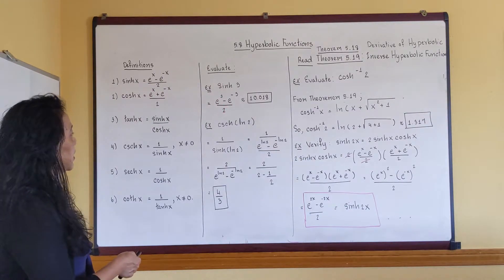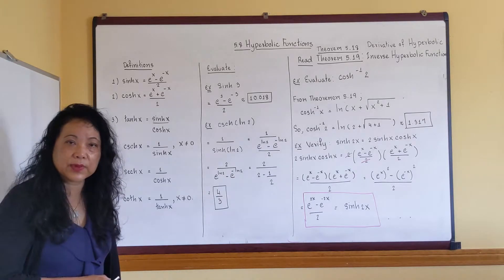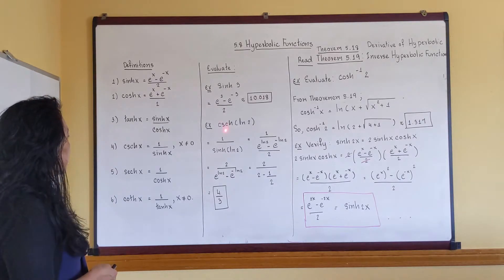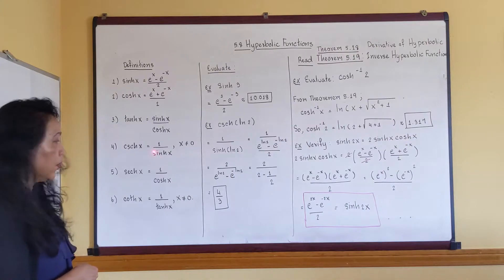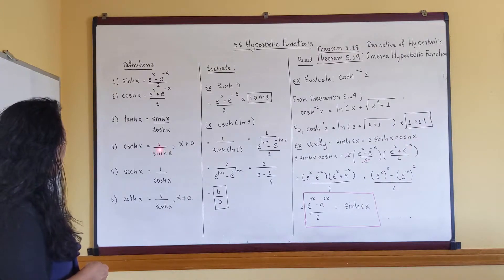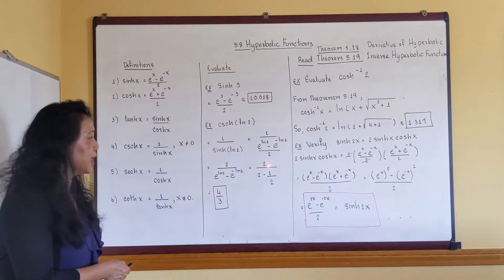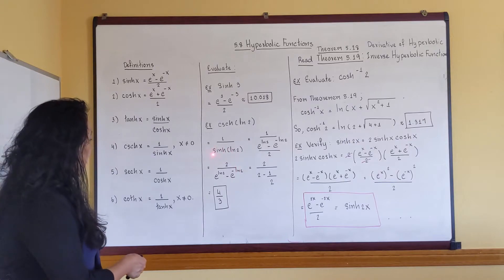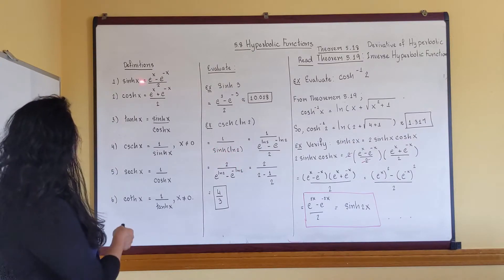The second one: hyperbolic cosecant of ln 2. So I'm gonna go to definition number 4. Here it is equal to 1 over hyperbolic sine of x. My x here is ln 2. Then I have to go to the definition of hyperbolic sine which is over here.